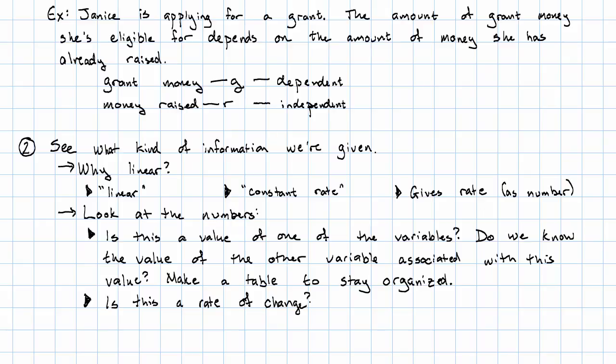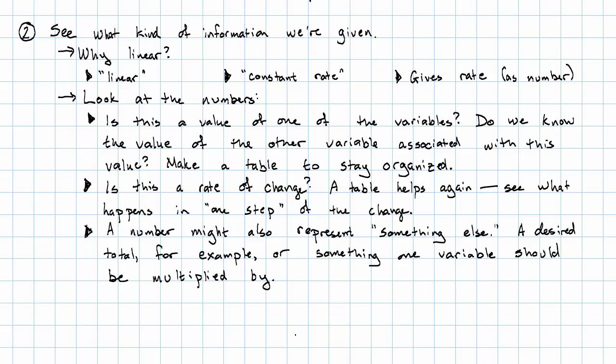Something else that a number that you see in a problem like this might represent? It might represent a rate of change. Often when you see that, the problem is telling you the slope. A table will often help us there again. We can do one step of the change and see what happens. The last thing a number might be is something else. It might represent some sort of desired total, or it might represent a number that one variable should be multiplied by.